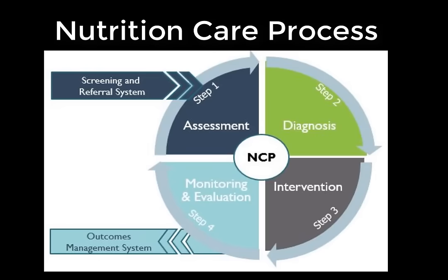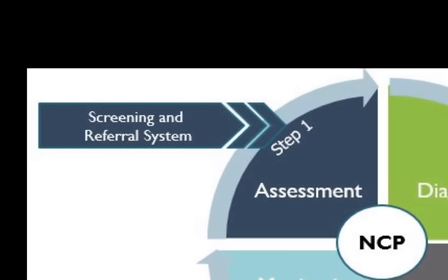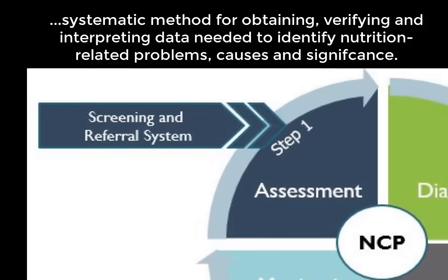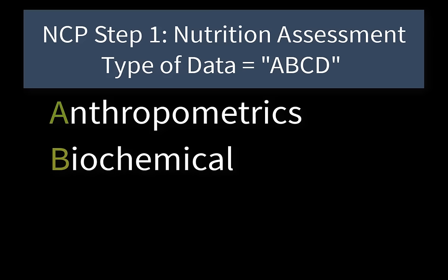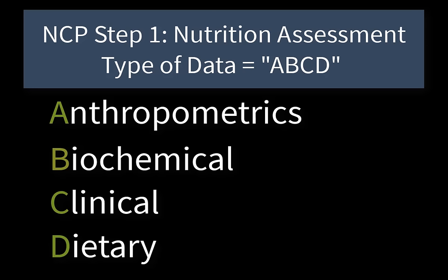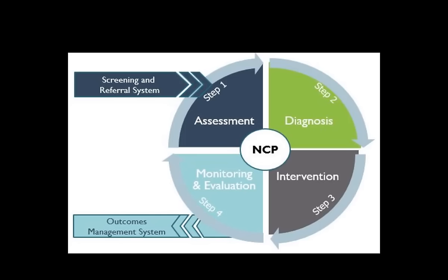Here's a quick overview of the four steps. Step one is nutrition assessment — the systematic method for obtaining, verifying, and interpreting data needed to identify nutrition-related problems, causes, and significance. The data we typically collect is summarized by the acronym ABCD: Anthropometrics (height, weight, head circumference), Biochemical (blood lipids, blood glucose, hematocrit), Clinical (physical assessment data), and Client history (family history for disease risk).